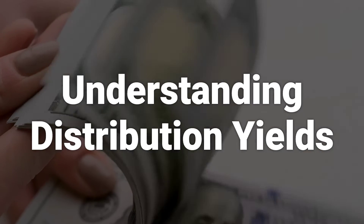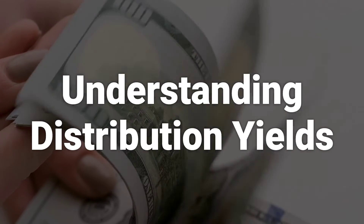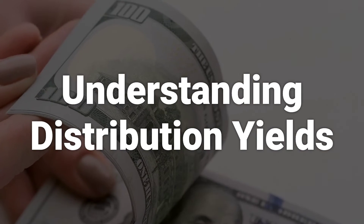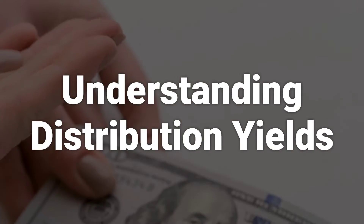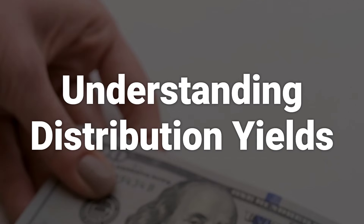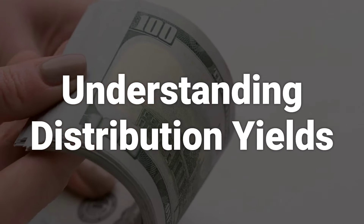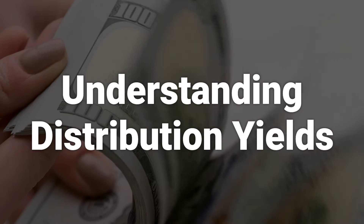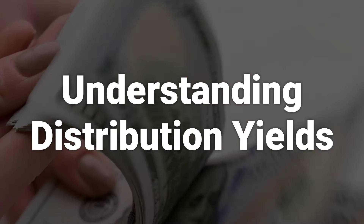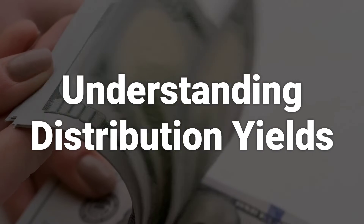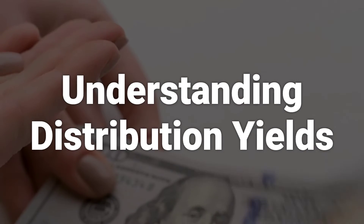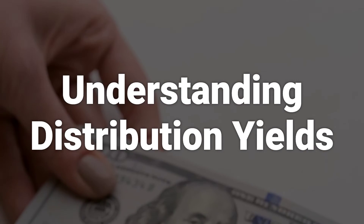The calculation for distribution yields uses the most recent distribution, whether it's interest, a special dividend, or a capital gain, and multiplies the payment by 12 to get an annualized total. This total is then divided by the net asset value to determine the distribution yield.